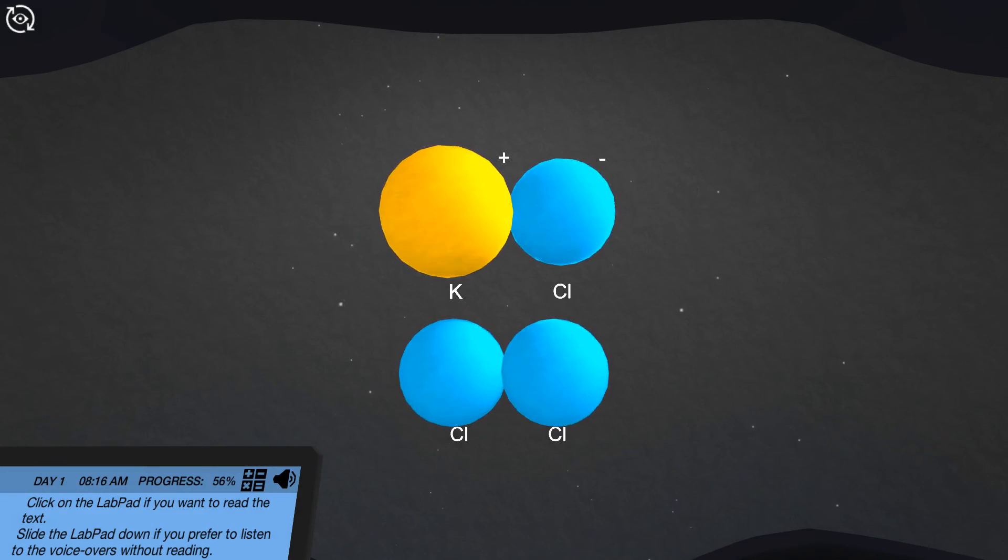In summary, in ionic bonds, such as those of KCl, atoms of opposite charge are held together by electrostatic forces. Electrons are shared by 2 atoms in covalent bonds, as for example in Cl2.